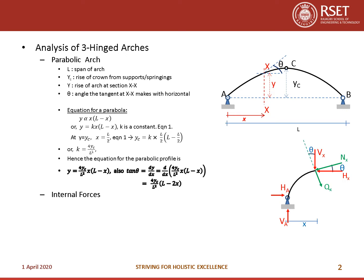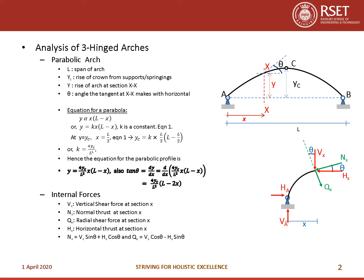If the angle at X is theta, then NX makes an angle theta with HX, and QX makes an angle theta with VX. VX is the vertical shear force at section XX, NX is the normal thrust, QX is the radial shear force, and HX is the horizontal thrust at section X. From equilibrium: NX = VX·sin θ + HX·cos θ, and QX = VX·cos θ − HX·sin θ.